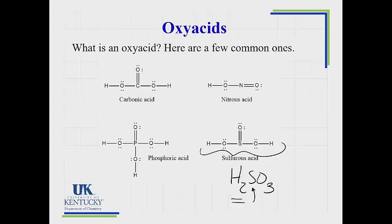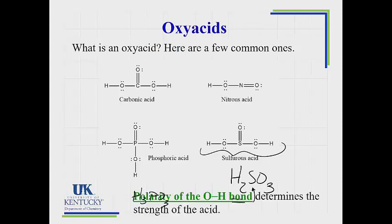There are a few odd exceptions — H3PO3, for example, has one hydrogen attached to a phosphorus instead of the oxygens. But in general, assume that your hydrogens are attached to oxygens, and then the oxygens are attached to a central atom. When you have an oxy acid, we're not going to be looking at bond strength; we're going to be looking at a couple of other things. What we're really looking at is the polarity of the OH bond. Let's think about this polarity using nitrous acid as an example.